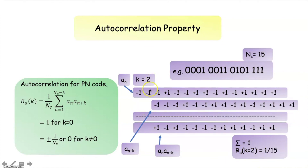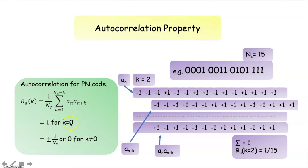Similarly, when k is equal to 2, we find the product of a_n with a_{n+k}. Here the sum is equal to 1, so that R_a (the autocorrelation value) will be equal to 1 by 15, or 1 by N_c, that is plus or minus 1 by N_c. Thus we can see that the autocorrelation for a PN code is equal to 1 when there is no shift in the bit position, and is equal to 0 or plus or minus 1 by N_c when k is not equal to 0.